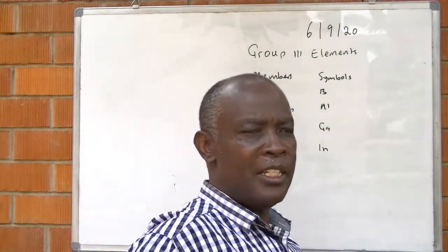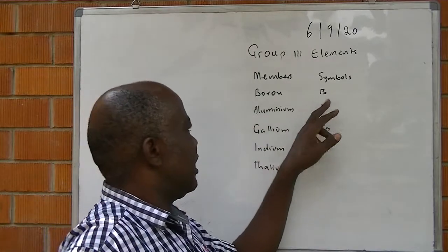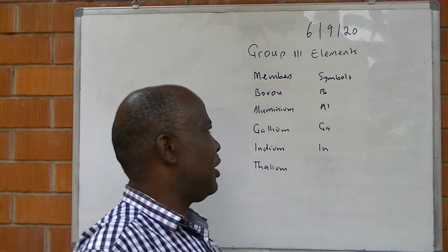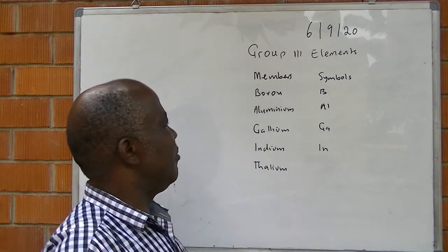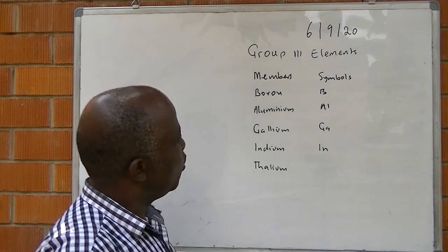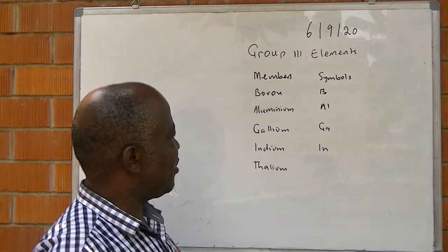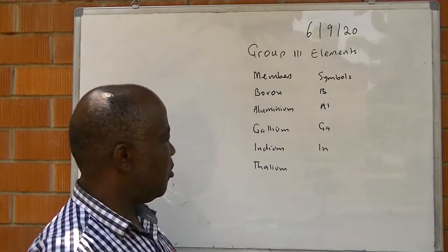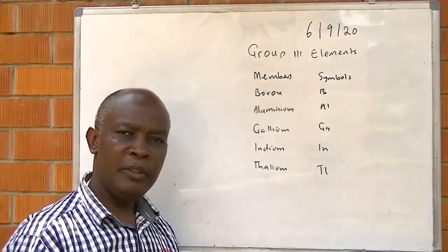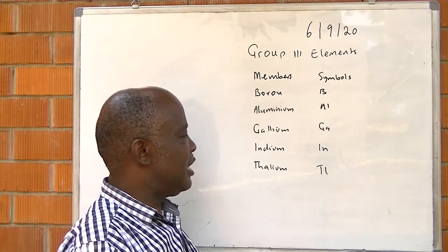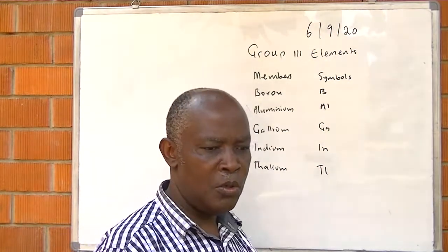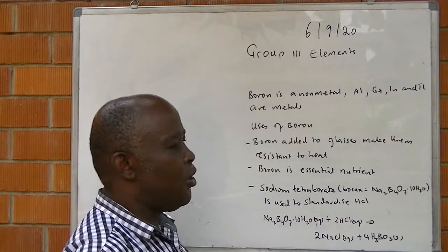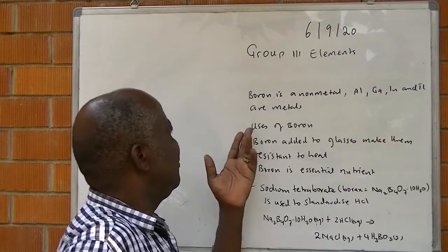Members of Group 3 Elements include Boron, the symbol is B; Aluminium, the symbol is Al; Gallium, the symbol is Ga; Indium, the symbol is In; and Thallium, the symbol is Tl. Boron is a non-metal, while Aluminium, Gallium, Indium, and Thallium are metals.